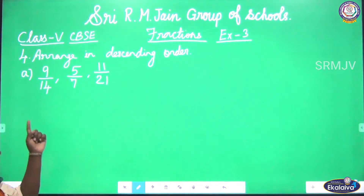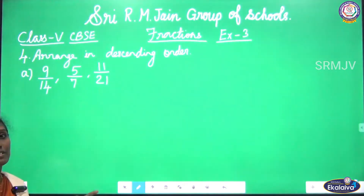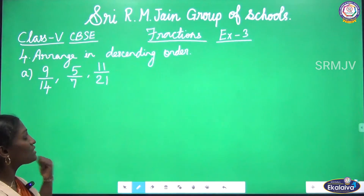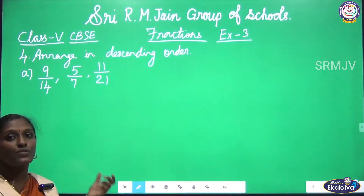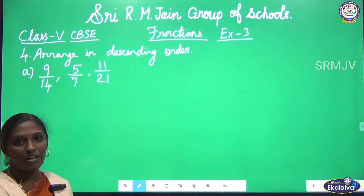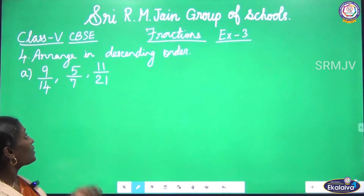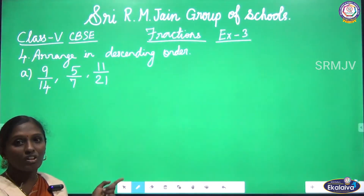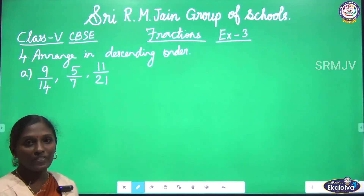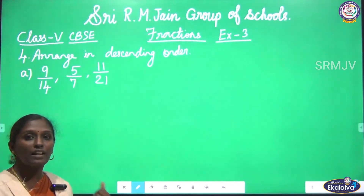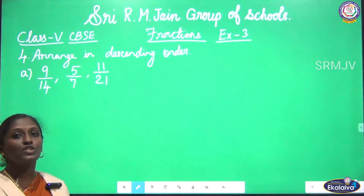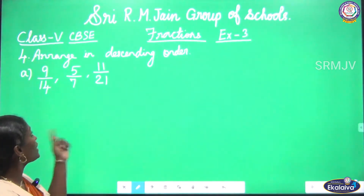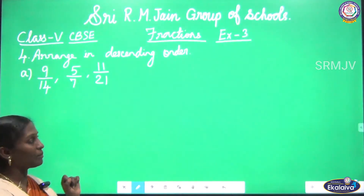The next question is: arrange in descending order. Descending order means we have to arrange the given fractions from greatest to smaller. First, see the fractions — these fractions are unlike fractions, so we have to change the unlike fractions to like fractions by finding the LCM of the denominator numbers.